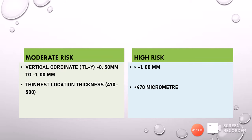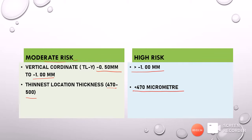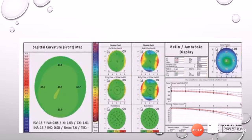In summary for pachymetry risks: a vertical inferior displacement of 0.5 to 1 mm is moderate risk, and more than 1 mm is high risk. Thinnest location thickness of 470 to 500 microns is moderate risk, while less than 470 microns is high risk. The BAD display shows the standard elevation maps, exclusion elevation maps, and the difference between them — in this example case it appears normal.